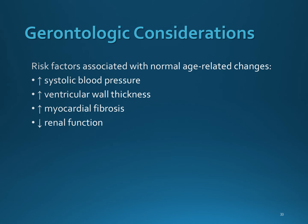Gerontological considerations for the aging adult are that older patients may present with atypical signs and symptoms such as fatigue, weakness, and somnolence. Normal age-related changes such as increased systolic blood pressure, increased ventricular wall thickness, and increased myocardial fibrosis can increase the frequency of exacerbations of heart failure. Decreased renal function can also make the older patient resistant to diuretics and more sensitive to changes in volume. Administration of diuretics to older men requires close monitoring for bladder distension caused by urethral obstruction from an enlarged prostate gland. Urinary frequency and urgency may be particularly stressful to the older adult, as many have arthritis and limited mobility.